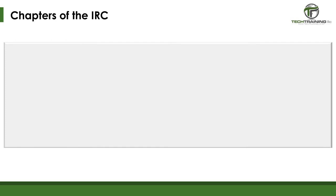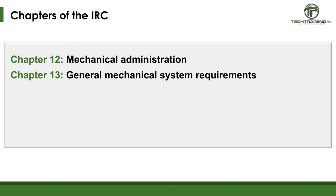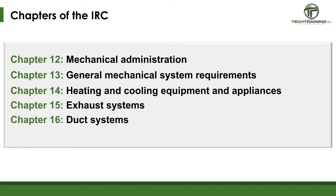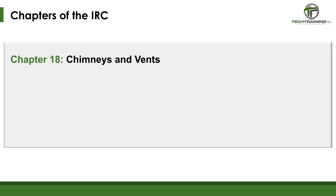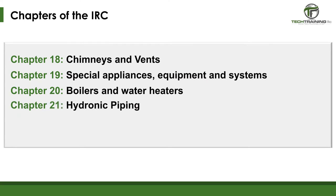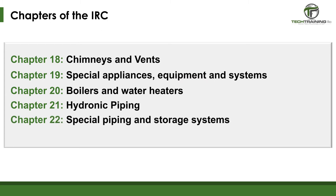Part 5 is Mechanical, covering Chapters 12 through 23: Chapter 12, Mechanical Administration; Chapter 13, General Mechanical System Requirements; Chapter 14, Heating and Cooling Equipment and Appliances; Chapter 15, Exhaust Systems; Chapter 16, Duct Systems; Chapter 17, Combustion Air; Chapter 18, Chimneys and Vents; Chapter 19, Special Appliances, Equipment and Systems; Chapter 20, Boilers and Water Heaters; Chapter 21, Hydronic Piping; Chapter 22, Special Piping and Storage Systems; and Chapter 23, Solar Thermal.